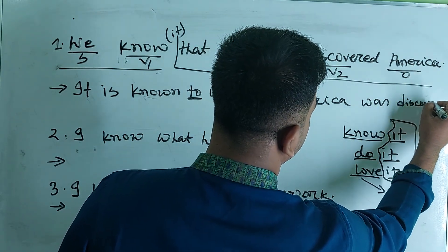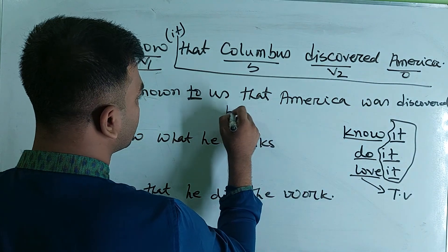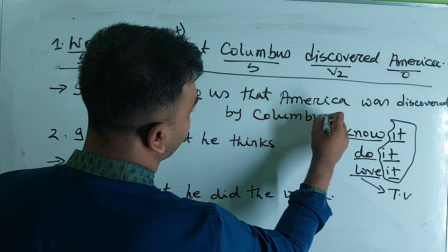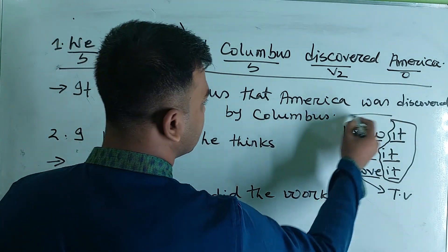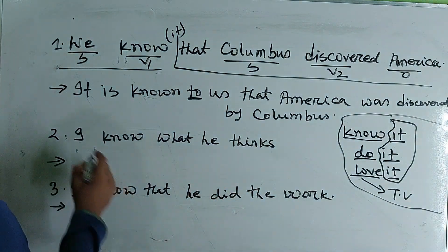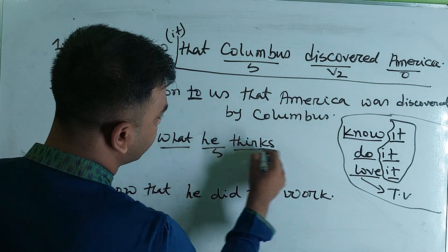Discovered, d-i-s-c-o-v-e-r-e-d, past participle discovered. America was discovered by Columbus, C-o-l-u-m-b-u-s. America was discovered by Columbus. In the second sentence, America is the subject.